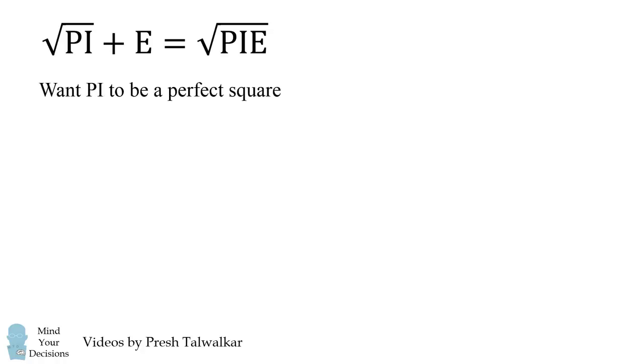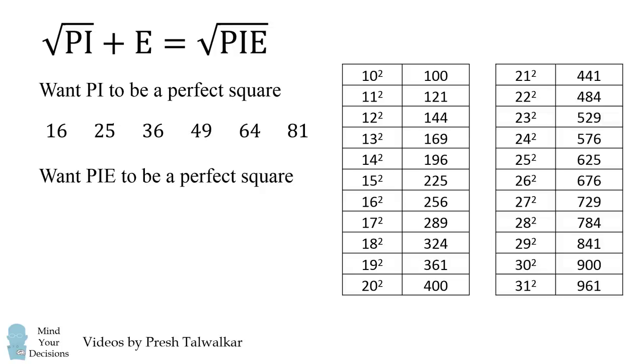The first thing is we want PI to be a perfect square. So we can enumerate all of the cases where we have a two-digit perfect square. Next, we need a three-digit number that's a perfect square. So we'll enumerate all of these options.